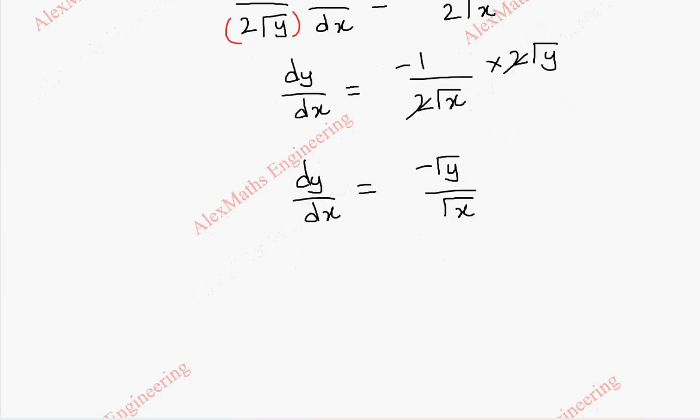Now, we need to find its value at 1 by 4 comma 1 by 4. With the substitute, this will become minus root 1 by 4 by root 1 by 4. So, after cancelling, we get minus 1.